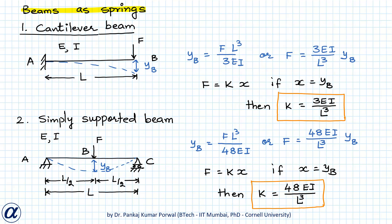In structural analysis, beams also act like springs because they deform under the action of forces. For a cantilever beam of length L acted upon by force F perpendicular to its length, the displacement at the free end yb is given by yb equals F·L³ over 3EI. Comparing with F equals k·x, we get k equals 3EI over L³.